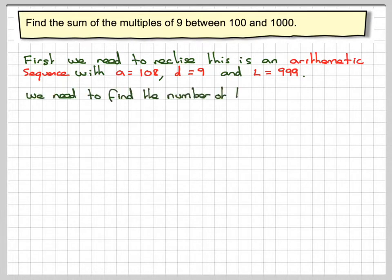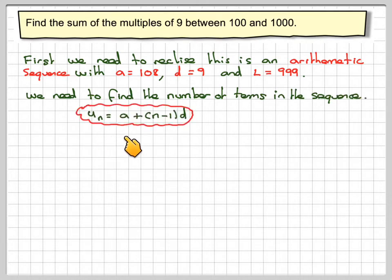So we need to find the number of terms in this sequence. So we know that un is equal to a plus n minus 1 times d. So we know that the last term, 999, is going to be equal to the first term, which is 108, plus n minus 1 times 9.